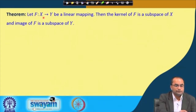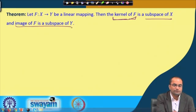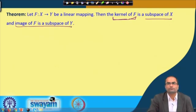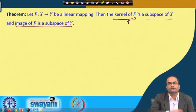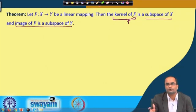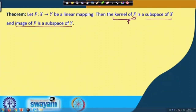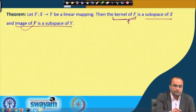There is a theorem: if F maps X to Y and is a linear mapping, then the kernel of F is a subspace of X, and the image of F is a subspace of Y. We will not formally prove this, but intuitively: if two elements both map to 0, their sum also maps to 0, so the kernel is closed under addition. Similar reasoning applies to the image.